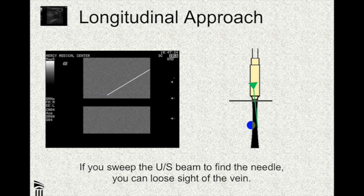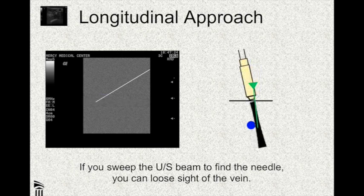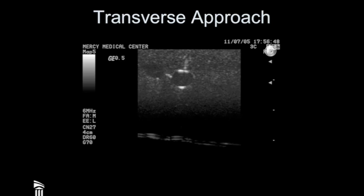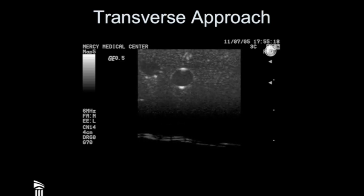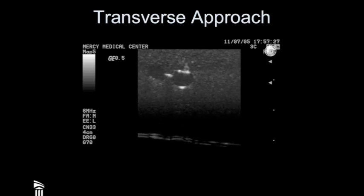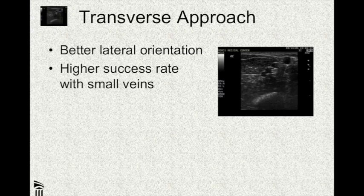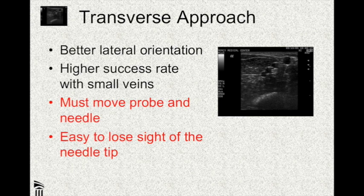If you sweep the beam over to the side trying to look for the needle, you end up losing the vein and get very frustrated. If you have a very large blood vessel such as a central vein, you can maybe get away with this. By contrast, this is the transverse approach, where we're looking at the vein in cross-section and also the needle in cross-section. It doesn't look as intuitive as the longitudinal approach, but it's still not that hard to understand. We follow that needle down through the tissue into the vein. If that needle is going to pass the side of the vein, we're going to know about it because it has better lateral orientation, and as a result there's a higher success rate with small veins.